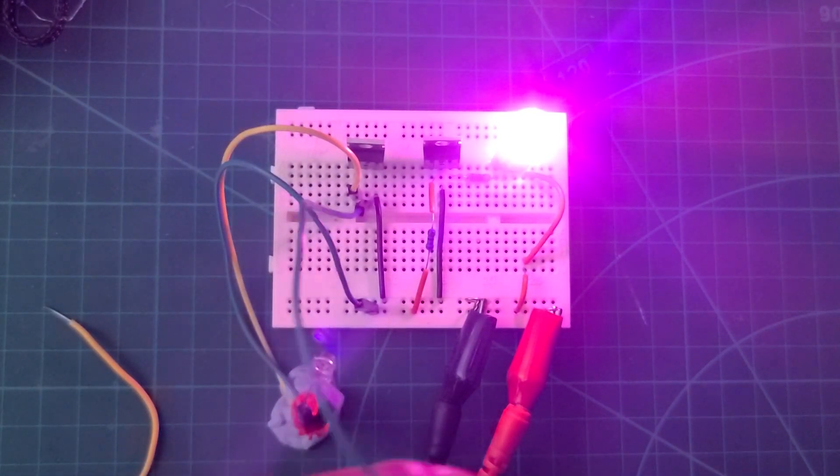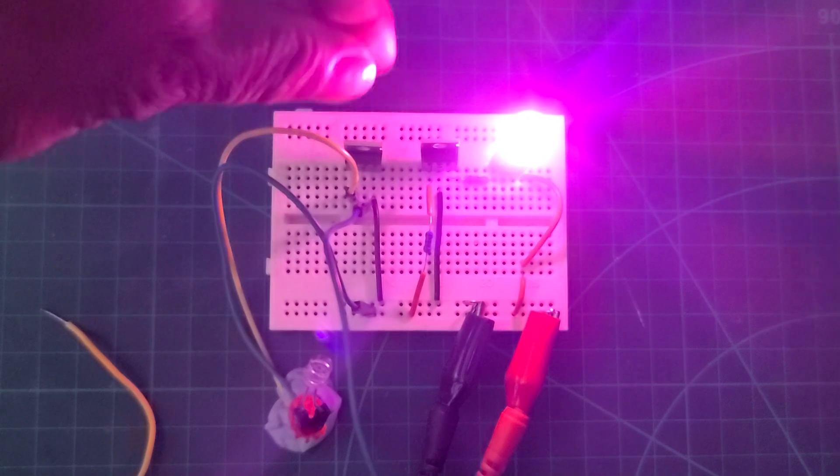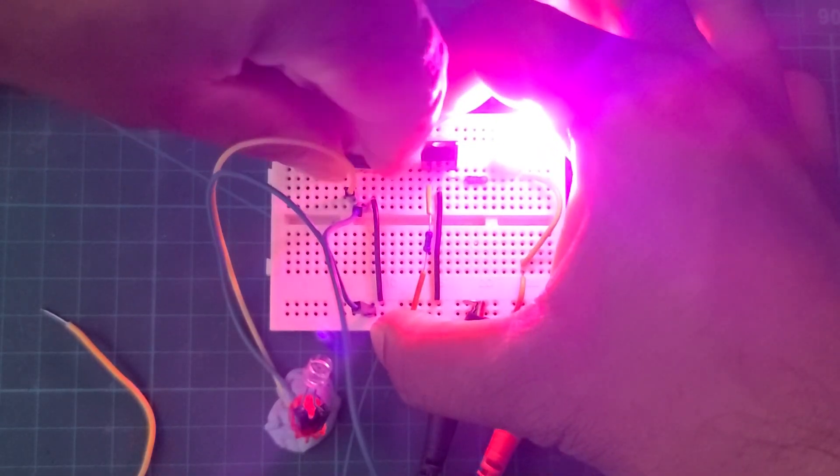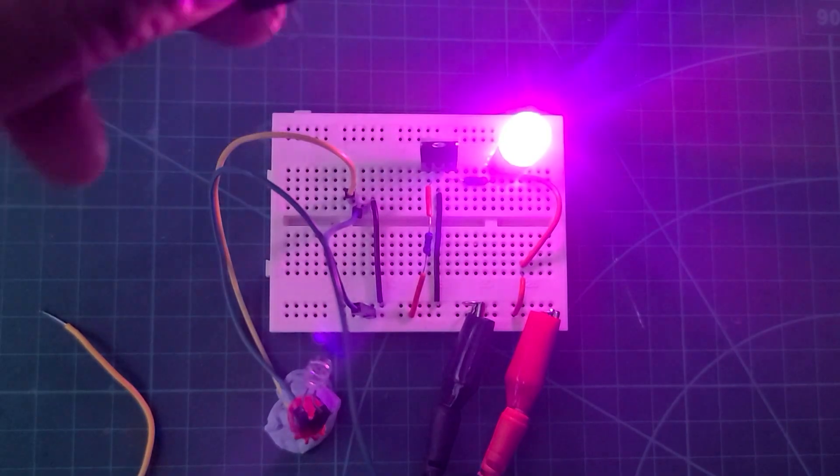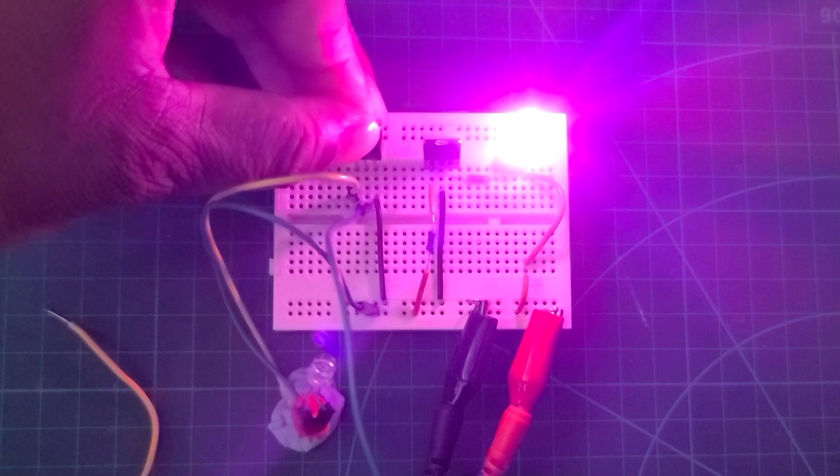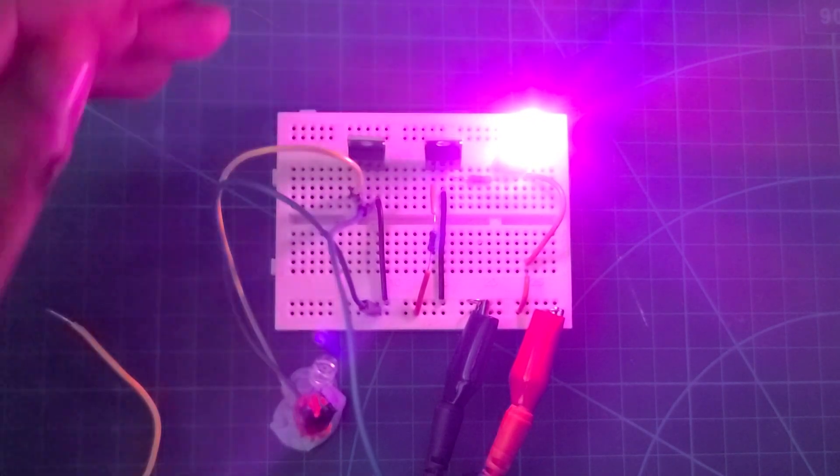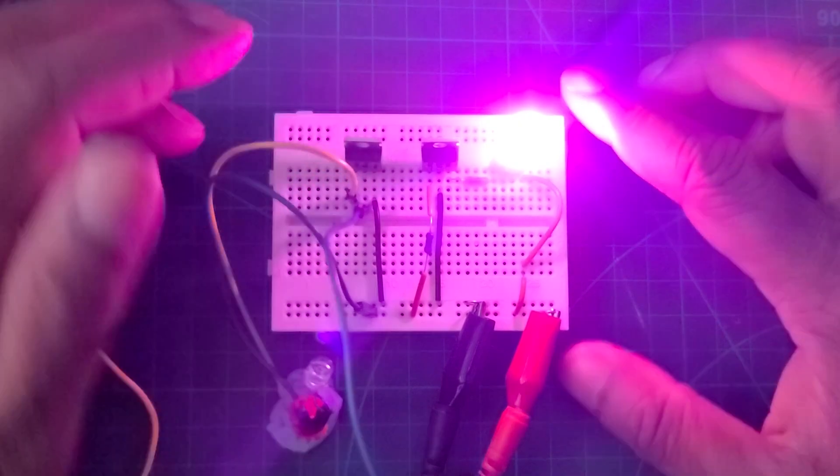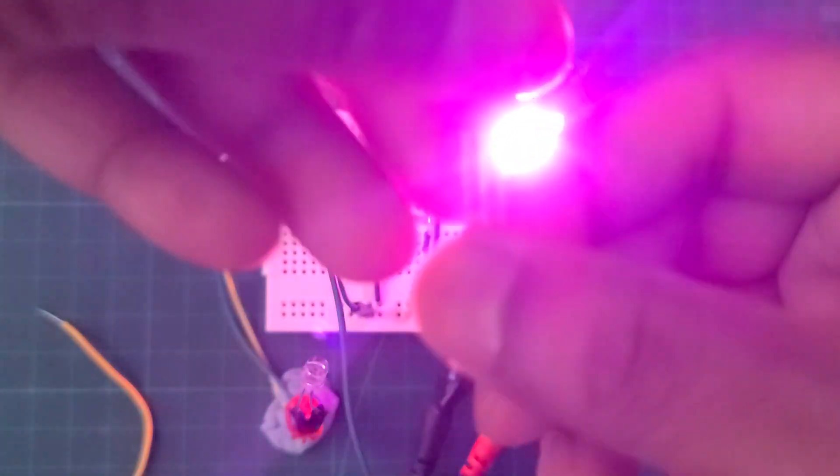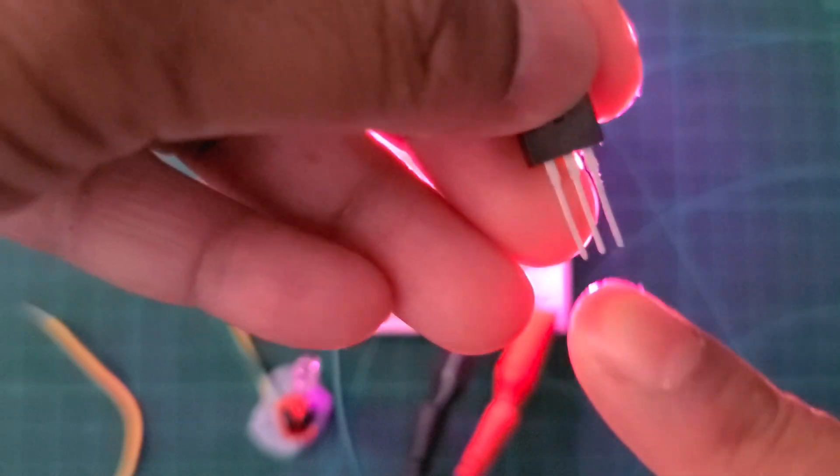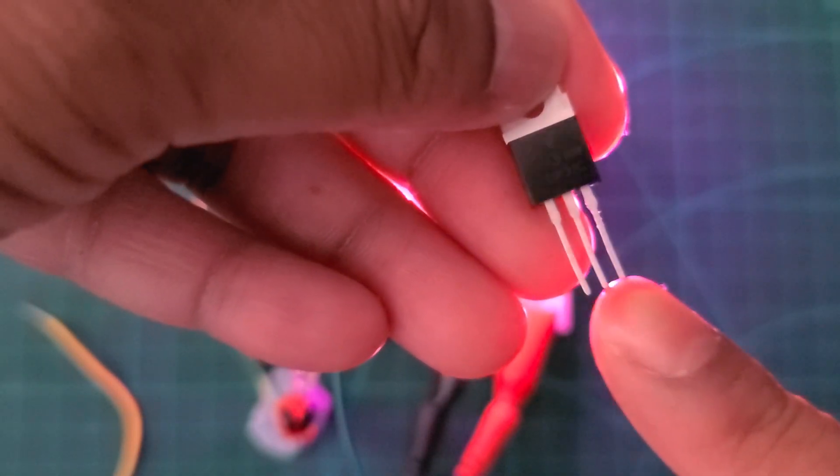So this is our MOSFET. Same NPN MOSFET, difficult to see, but this is the same type MOSFET but this one is TIP 31C. Same like the other MOSFET, this one has three pins: base, collector, emitter.